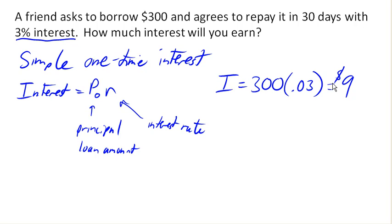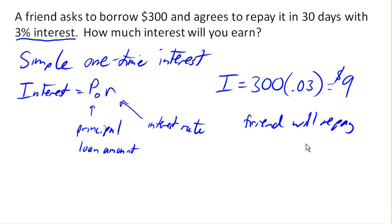Now if we wanted to know how much the friend is going to have to pay you back, we would add the interest to the original amount. Your friend will repay $300 plus $9, or in other words, $309 total.